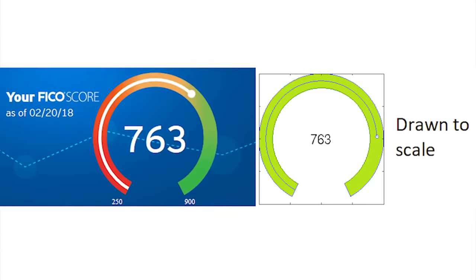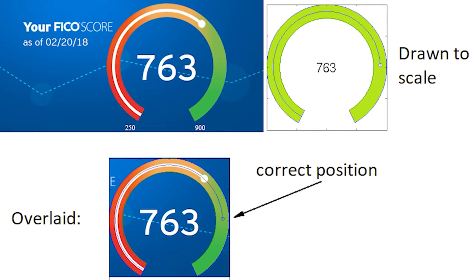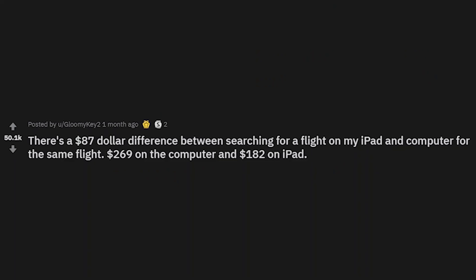Your FICO score: 763 — not bad. 'Drawn to scale, correct position' — that's just a UI error, a heads-up display error. That's easy to fix, that's not asshole design. I'm just being nitpicky at this point.